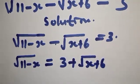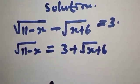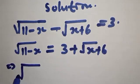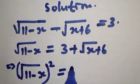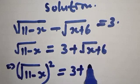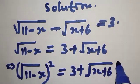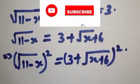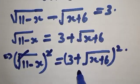What we do next is square both sides. Squaring both sides, this implies that we have square root of 11 minus X, all squared, equals 3 plus square root of X plus 6, all squared. The square cancels the square root on the left, giving us 11 minus X.